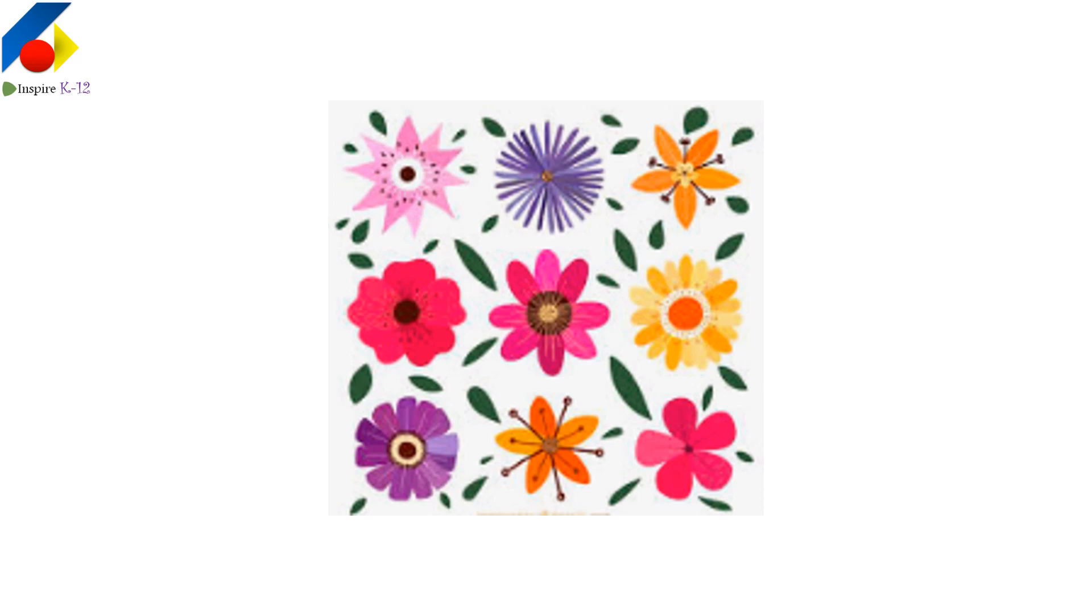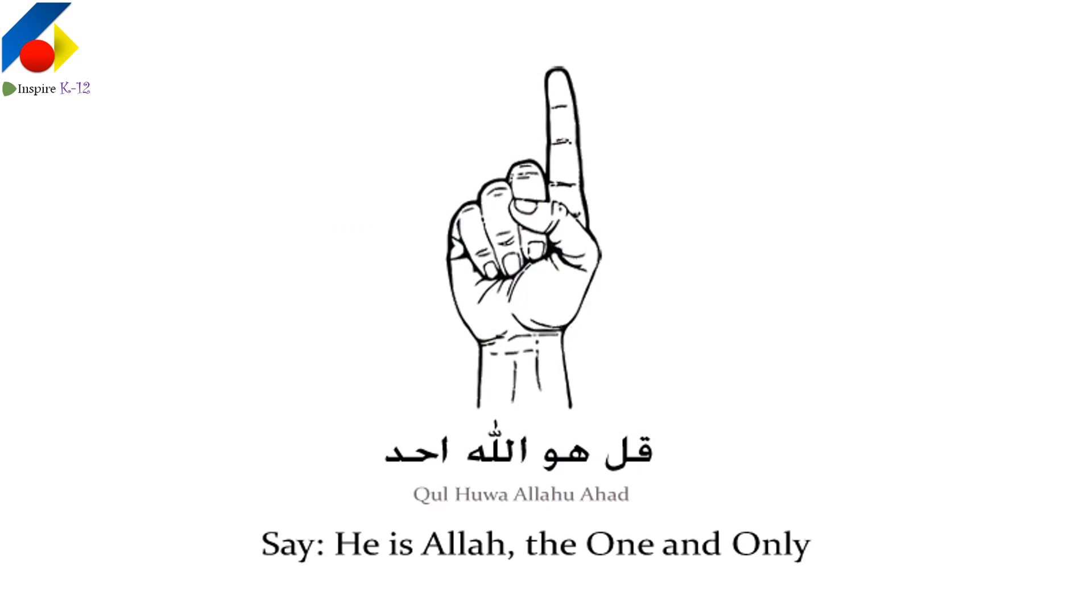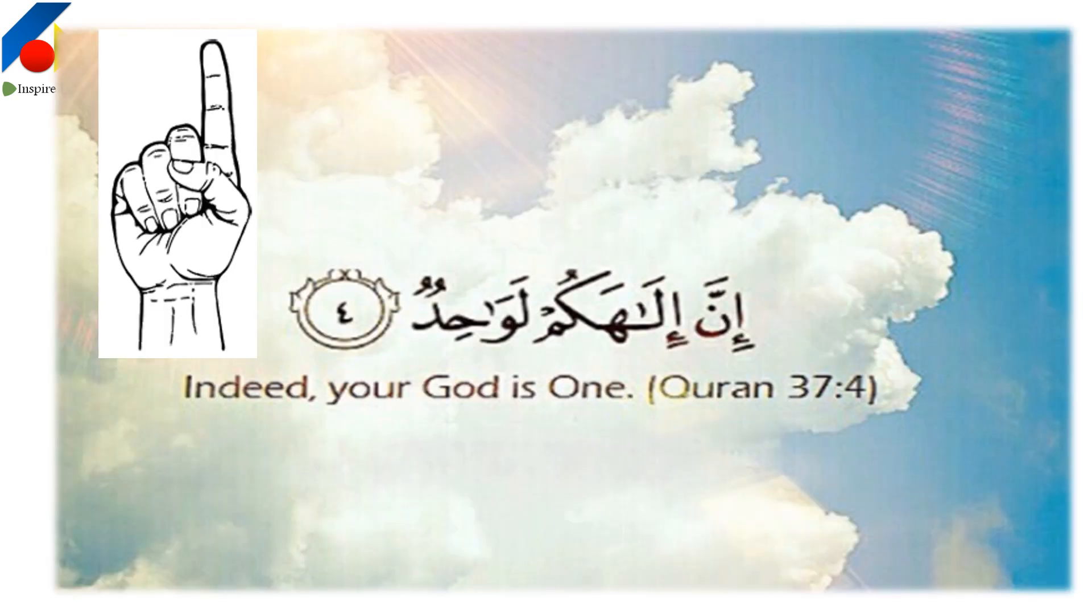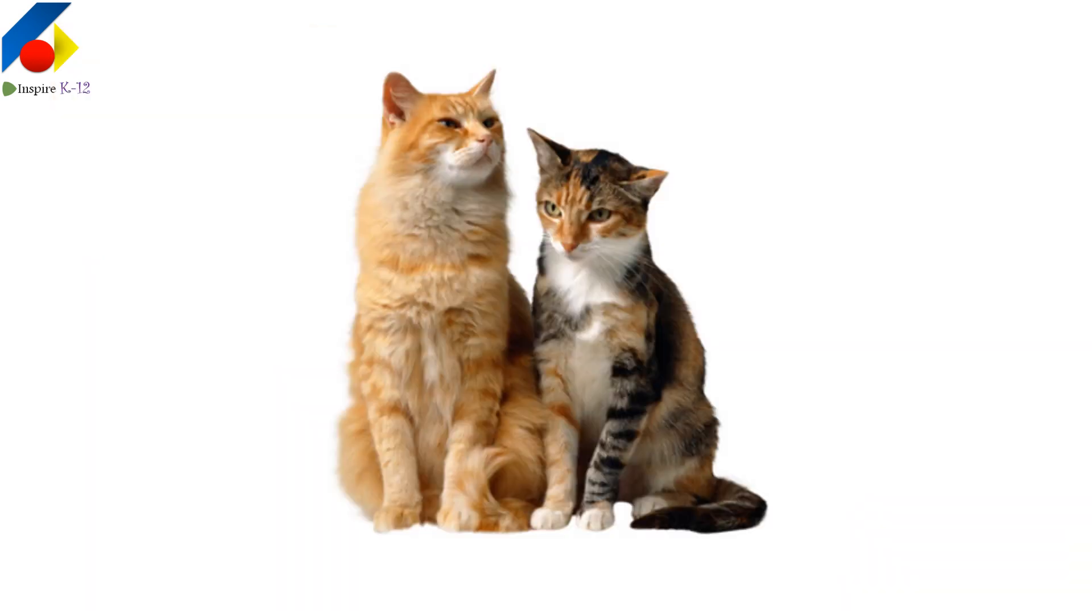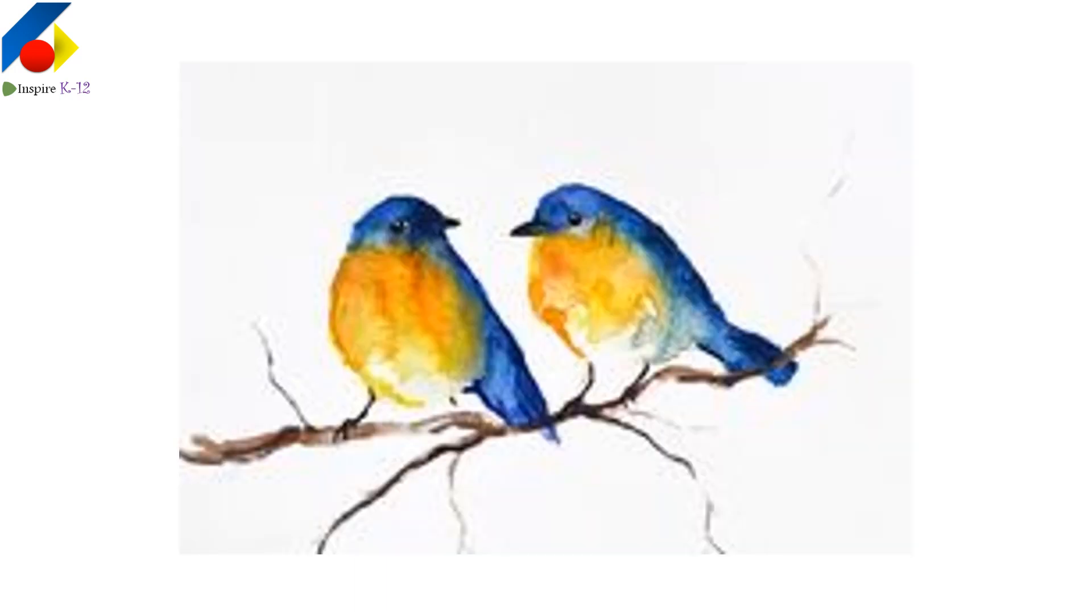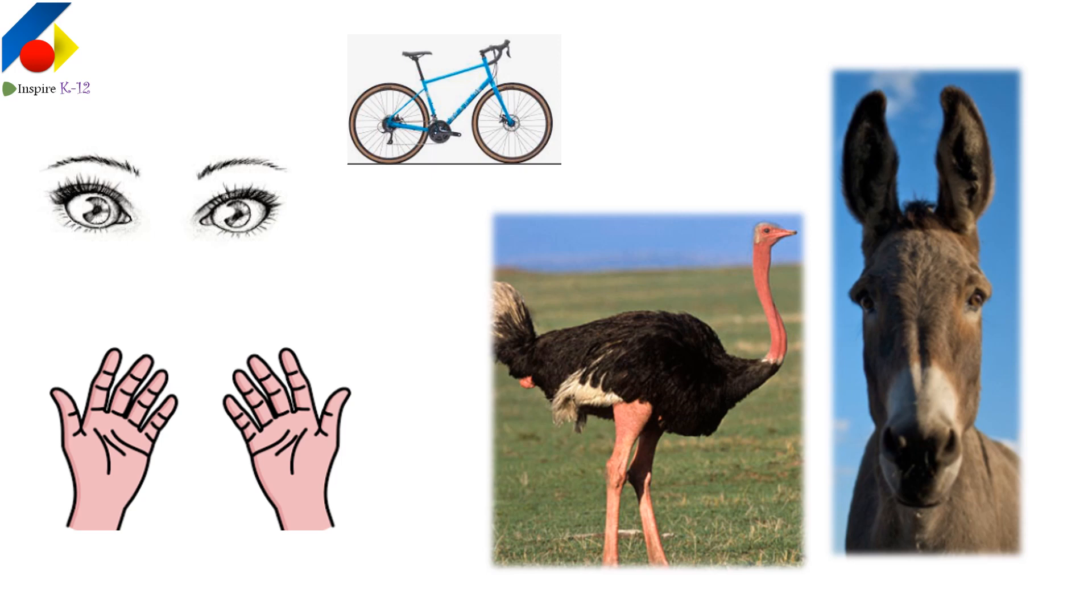Creator is one and creations are many. Let's take one more and it becomes two. How does two appear in life around the child? I have two ears, I have two legs, these are two birds.